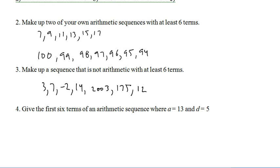Number 4, give the first 6 terms of an arithmetic sequence where A is 13 and D is 5. So, our first one is going to be 13. Add 5 will give us 18, 23, 28, 33, 38. Piece of cake.